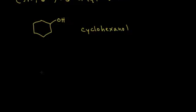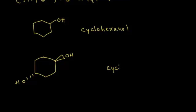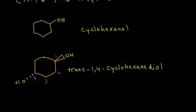What about a ring system with two hydroxyl groups? When you have two alcohols in the same molecule, the prefix is 'di,' so this is a diol. The base is cyclohexanediol. Numbering the ring — carbon 1, 2, 3, 4 — the alcohols are at positions 1 and 4. One OH is coming out at you and one is going away, so they are trans. The full name is trans-1,4-cyclohexanediol.